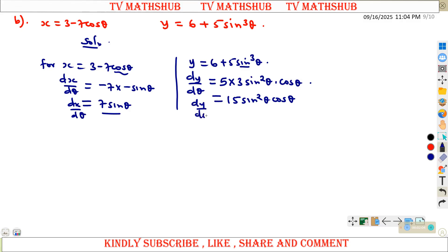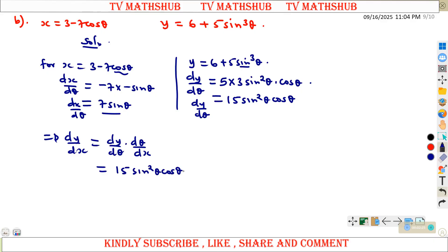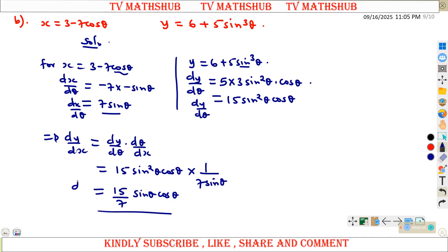So dy/dx equals dy/d-theta times d-theta/dx. dy/d-theta is 15 sine² theta cos theta. d-theta/dx is the reciprocal of dx/d-theta, which is 1 over 7 sine theta. This gives dy/dx equal to 15 over 7 times sine theta cos theta.